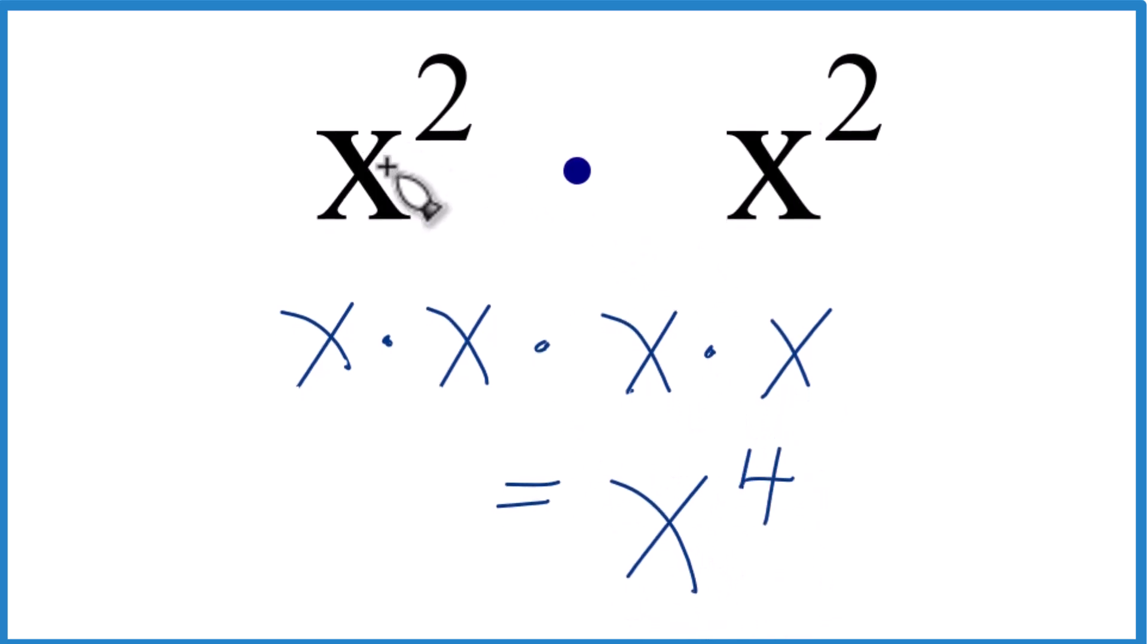So in answer to our question, x squared times x squared, that's x to the fourth. You might see that we just added these exponents together.